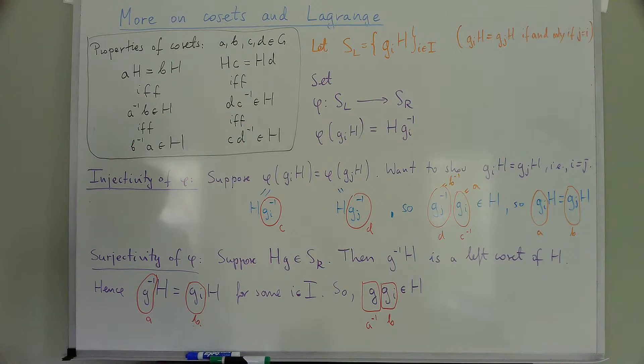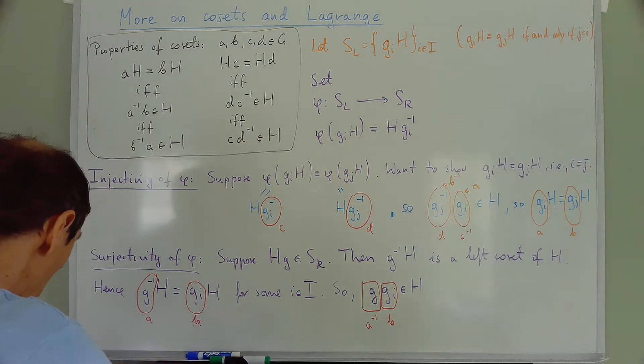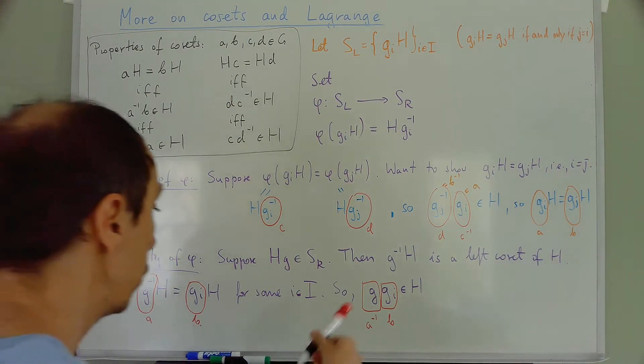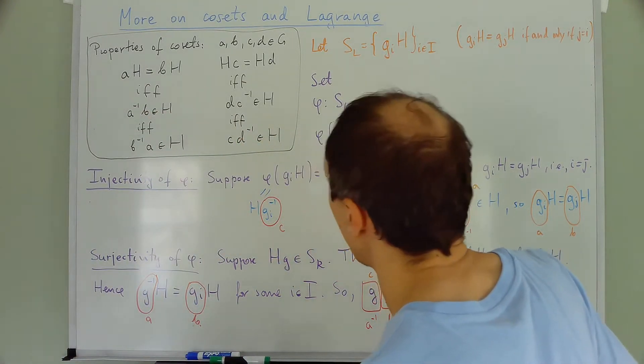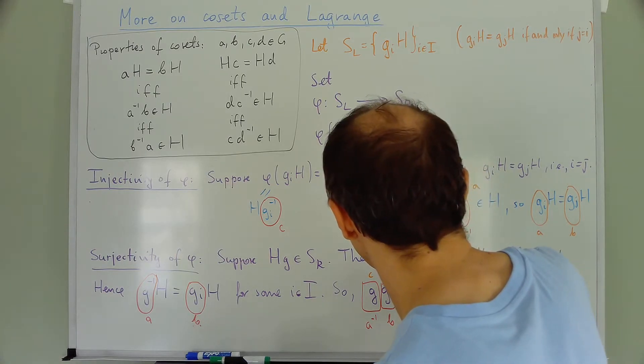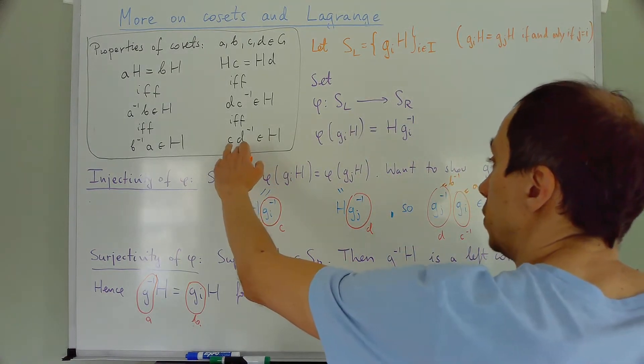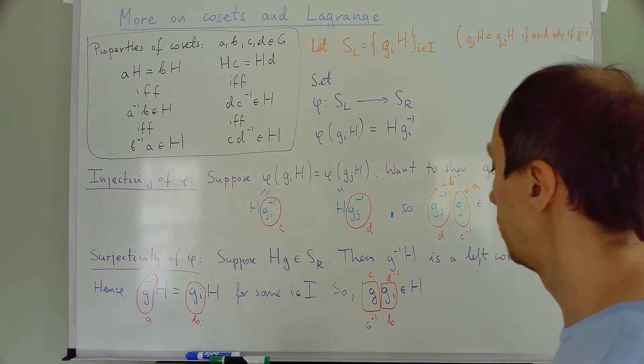So we get that this thing is in H. So I also want to call this C and this D inverse. So I want to use this property here.